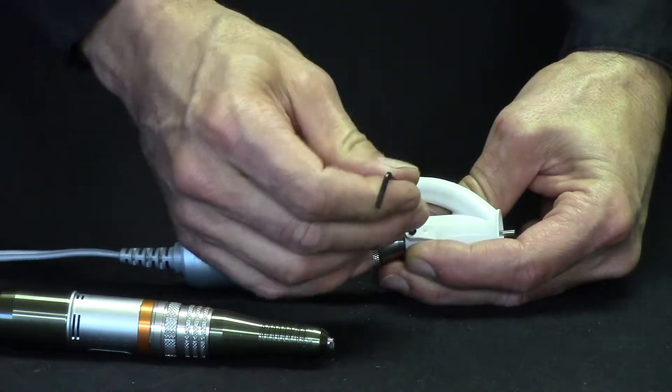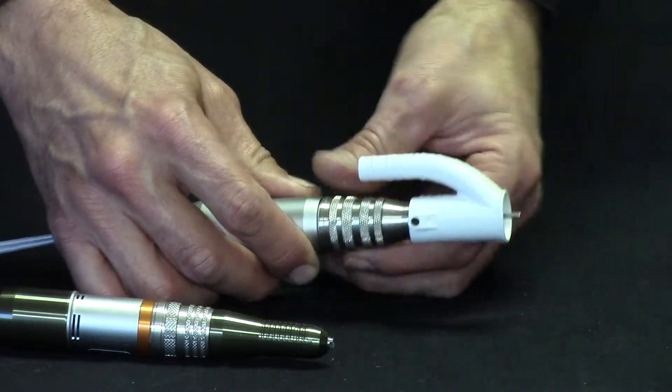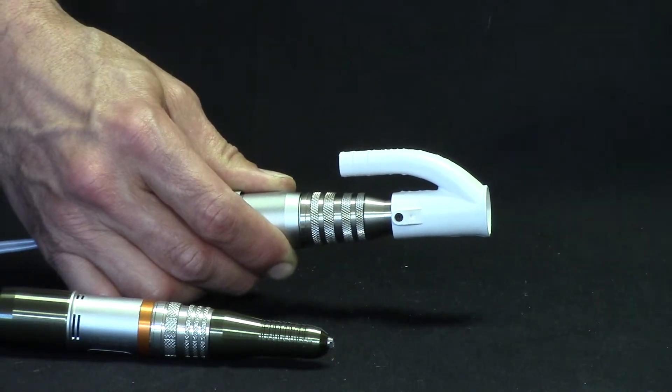And you're done with the sheath installation. Now to change your burr, you can rotate this twist ring and remove the burr or mandrel if it's a brand new handpiece.